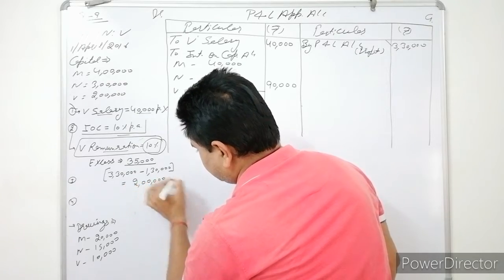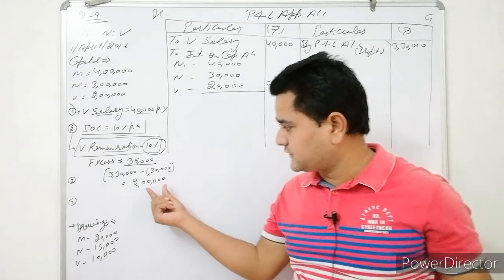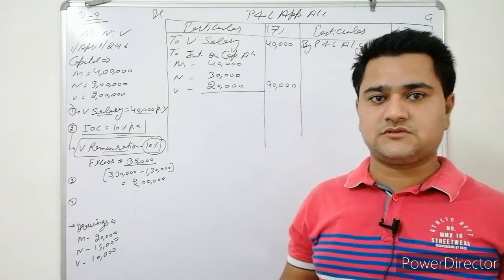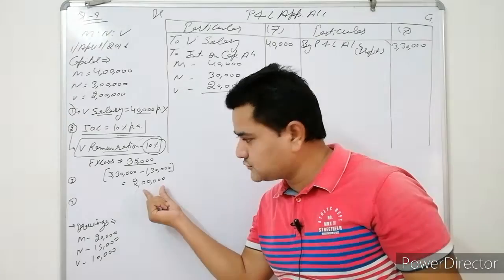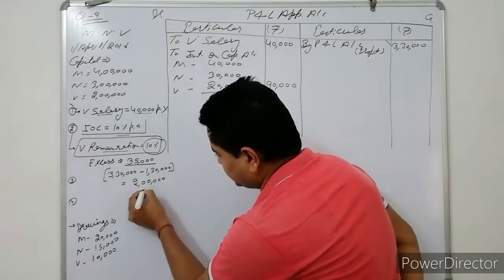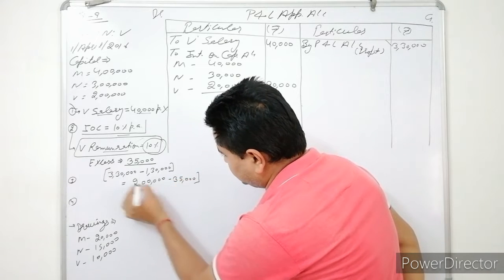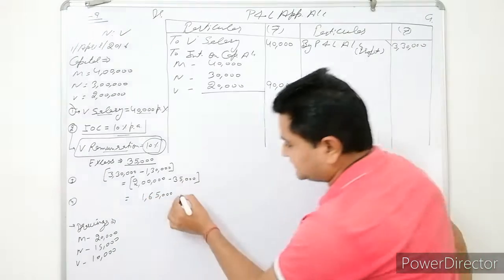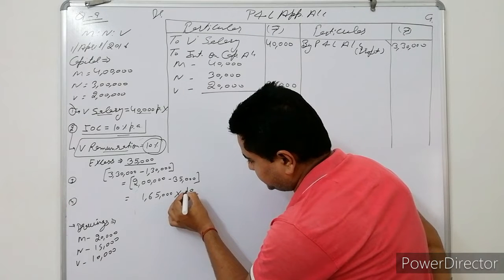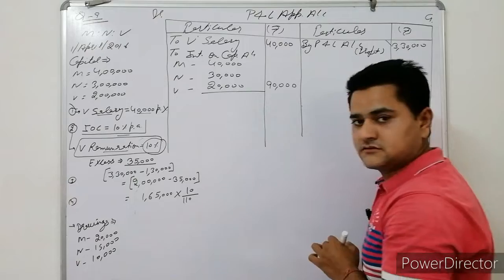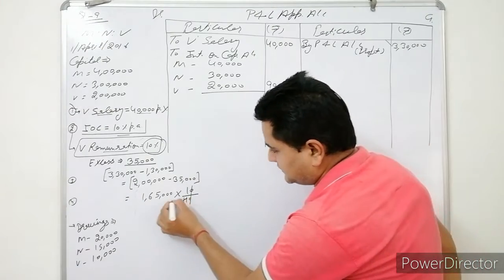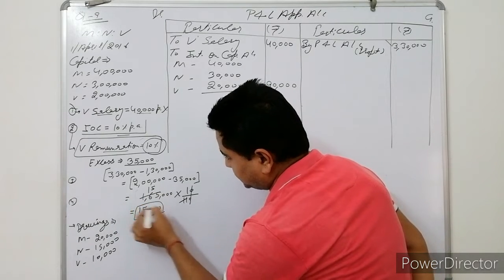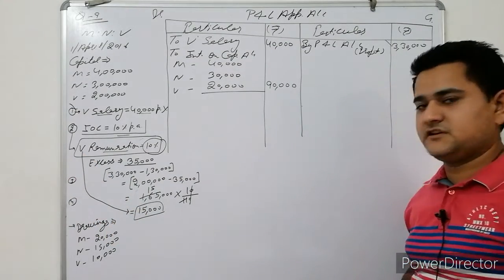The excess over Rs.35,000 is Rs.2,00,000 minus Rs.35,000 = Rs.1,65,000. Since it says 'after,' we use the formula: 10/110. So 1,65,000 × 10/110 = 1,65,000 ÷ 11 = Rs.15,000. Weibo's remuneration comes to Rs.15,000.